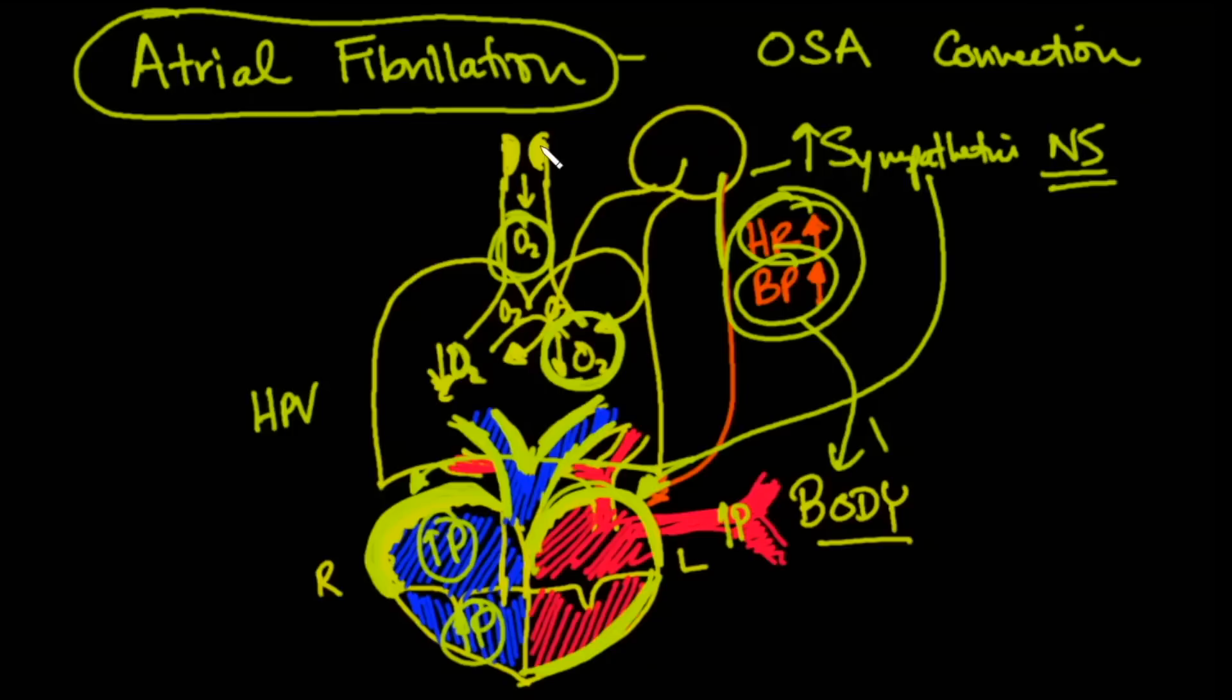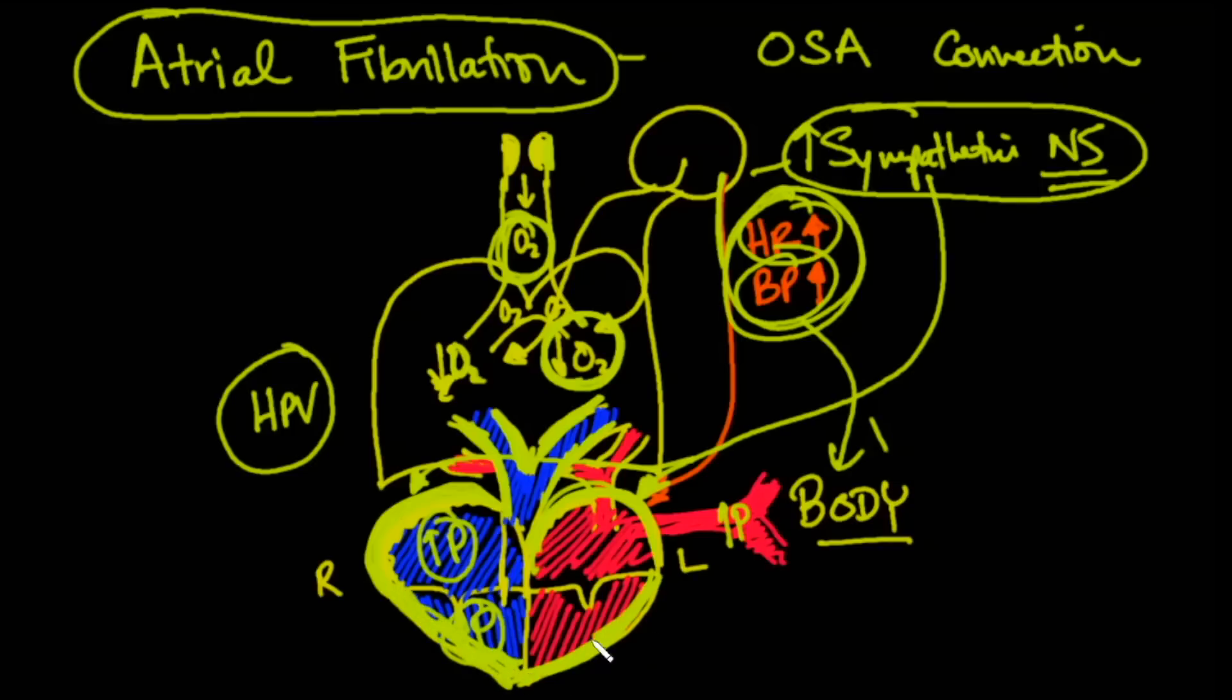So again, low oxygen from obstructive sleep apnea causes sympathetic nervous system release from the central nervous system. It causes hypoxic pulmonary vasoconstriction. This causes hypertrophy of both the right and the left ventricles, which then in turn cause enlargement of the right atria and left atria, so bilateral, the atria on both sides. When that happens, it gets stretched, and then stretching it causes atrial fibrillation.